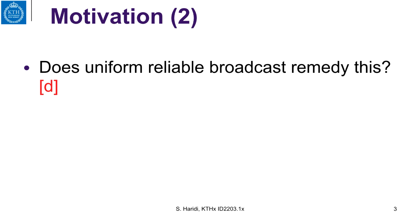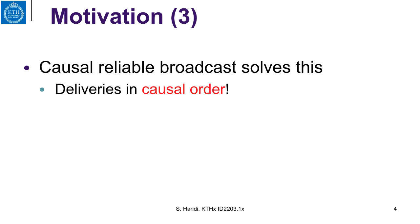Does uniform reliable broadcast remedy this? Uniform reliable broadcast does not impose any order between messages. So if a process broadcasts message M1 first and then broadcasts message M2 later, there is no guarantee that M1 will be delivered to all processes before M2. To solve this problem we use causal reliable broadcast, where deliveries of messages will be in causal order — meaning they respect the happens-before order of the broadcast events.